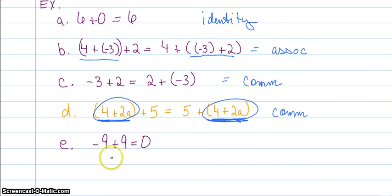-9 + 9 = 0. Negative 9, positive 9—those are inverses or opposites of each other. So we have the inverse property.